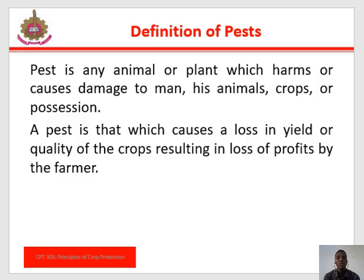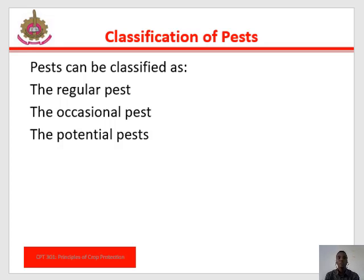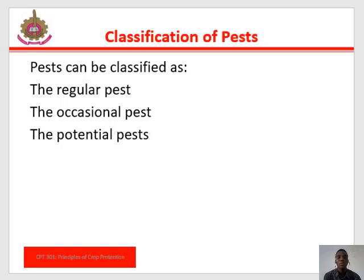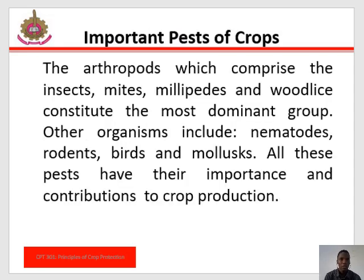Classification of pests: Pests can be classified as a regular pest, which perennially damages crops and whose population level rarely falls below the economic threshold. We also have the occasional pest — pests whose population levels are normally below the economic threshold but occasionally rise above it. Finally, we have the potential pest — pests whose population levels are usually considered to be far below the economic threshold but which can become highly injurious under changed cultural conditions or when introduced to new environments.